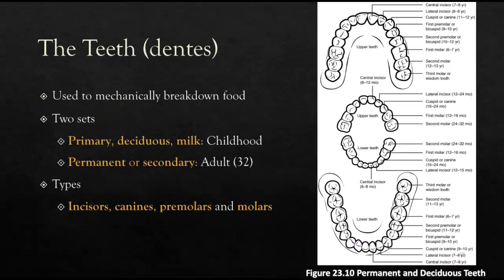Next, let's talk about the teeth, which mechanically break down food. We have two sets in our lifetime: primary (deciduous or milk) teeth in childhood, totaling 20, and permanent (secondary adult) teeth totaling 32. The types of teeth include incisors, canines (the sharp-looking teeth), premolars, and molars in the back.